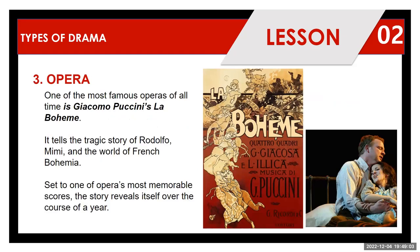One of the most famous operas of all time is Giacomo Puccini's La Bohème. It tells the tragic story of Rodolfo, Mimi, and the world of French Bohemian life, set to one of opera's most memorable scores, with the story revealing itself over the course of a particular year. This was one of the inspirations taken by Freddie Mercury in composing the song Bohemian Rhapsody, though that was exaggerated into a tragicomedy. Giacomo Puccini's La Bohème is definitely one of the most famous opera plays of all time.